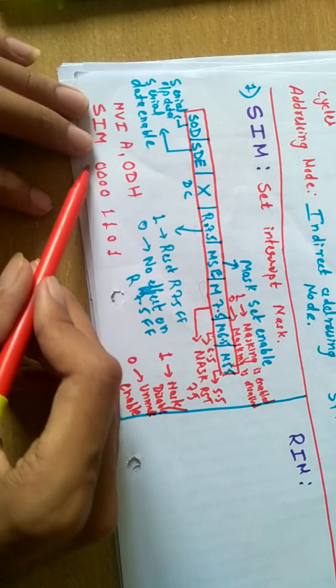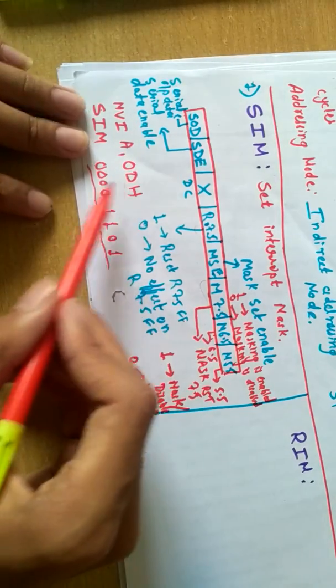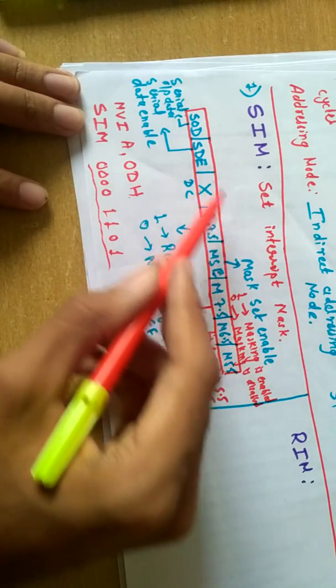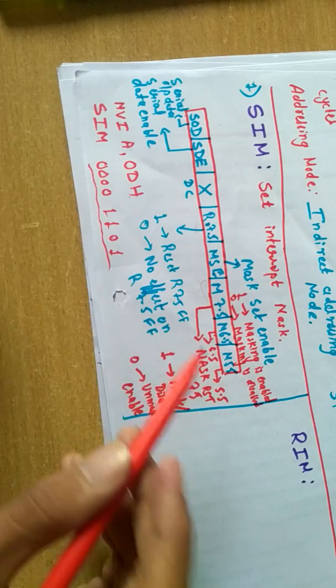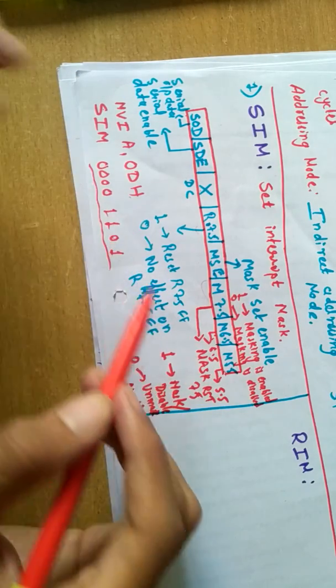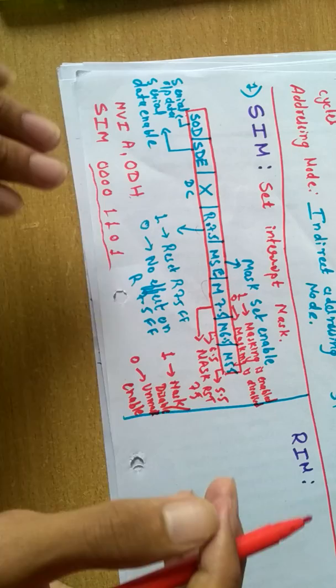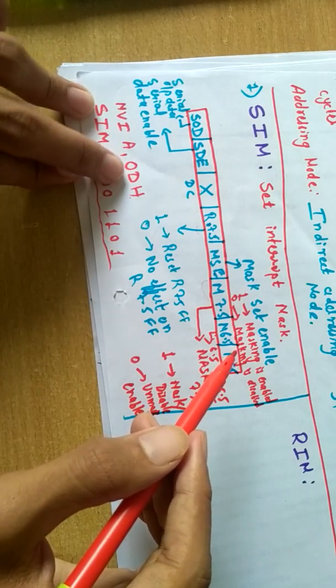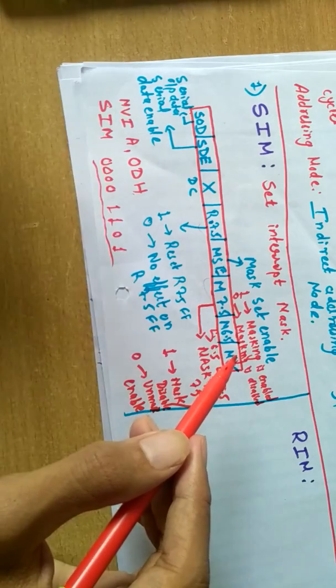Basically SIM is used to set as per our own data. Whatever data you can put in accumulator as per this, and after writing this instruction, loading any data in accumulator and writing SIM will do the work according to the data, the bits set or reset. Any data according to requirement can be loaded into the accumulator and then immediately writing SIM will do the preferred things.